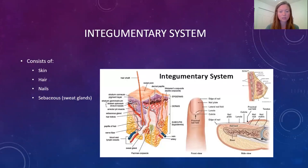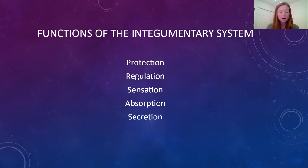So let's jump right into the integumentary system. This is the largest organ of our body. It encloses and protects all other body systems and contains the hair, skin, nails, oil glands, and sweat glands. Our skin provides protection, regulates our temperature, prevents water loss, and aids in absorption — like vitamin D, for example — and aids in sensory perception, so feel or touch.